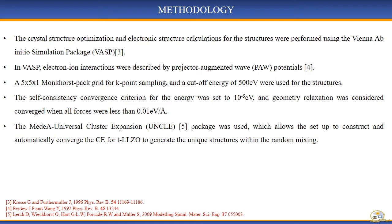The Vienna Ab Initio Simulation Package (VASP) was used to perform the crystal structure optimization and electronic structure calculation of the structures. In VASP, the projector-augmented wave potentials were used to describe the electron-ion interactions, whereby a 1×5×1 k-mesh point and a cut-off energy of 500 eV were used for the structures. The geometry relaxation was considered converged when all forces were less than 0.01 eV per angstrom, with the self-consistency convergence criteria for the energy set to 10⁻⁵ eV.